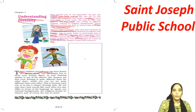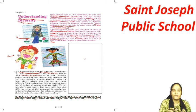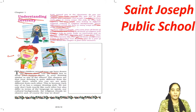Three children around your age have drawn the figures shown above. Here you can see three pictures — the first picture, the second picture, and the third picture. These three pictures have been drawn by three children around your age.